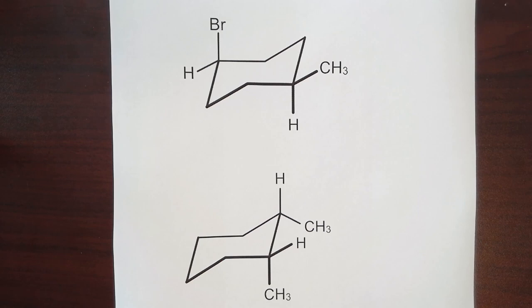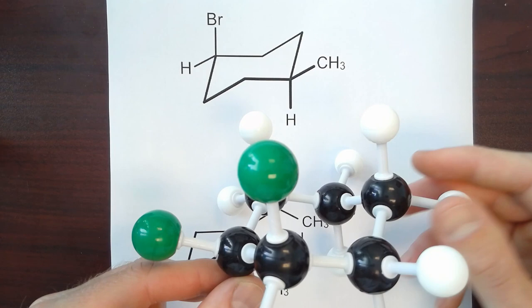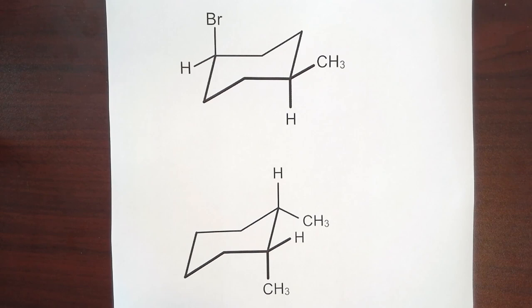One way to illustrate this is with a projection, where we're simply trying to project the shape of that cyclohexane ring. So if I bring my model back, notice that the carbon atoms are in sort of a chair conformation. And that's what we're illustrating here is the chair.